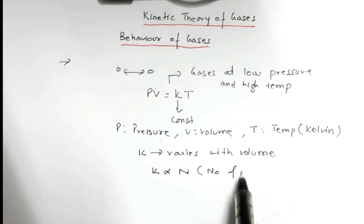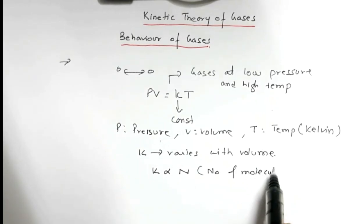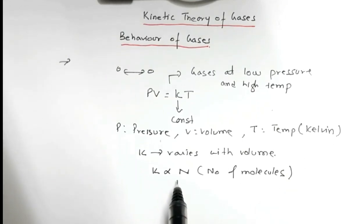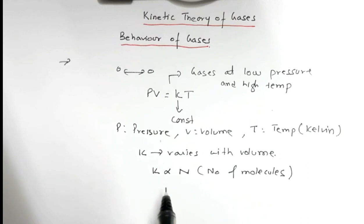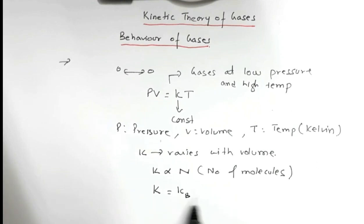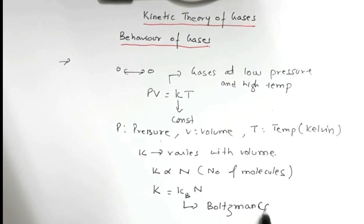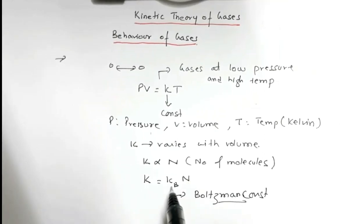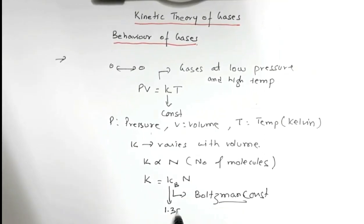Since K is directly proportional to number of molecules N, if I remove the proportionality symbol I get a constant — that is the Boltzmann constant. So K = K_B × N, where K_B is the Boltzmann constant. The value of K_B is 1.38 × 10⁻²³ joule per Kelvin.